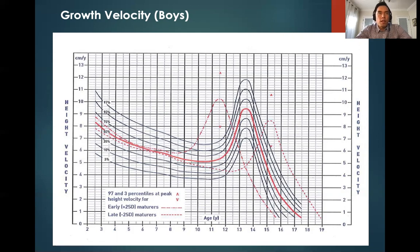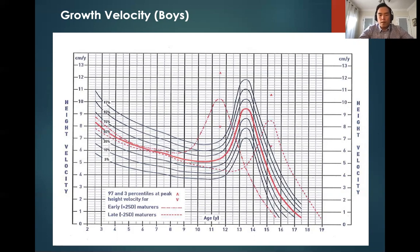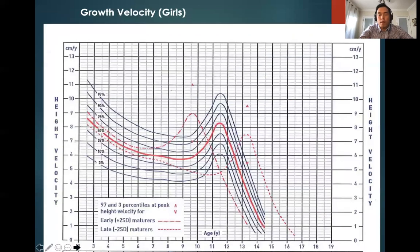This peak growth spurt occurs at mid-puberty, around Tanner stage 3 to 4. The graph shown is for boys. For girls, it would shift to the left because girls typically start pubertal development about two years before boys. You still have two dotted lines: one shifted to the left for precocious puberty and one shifted to the right for delayed puberty in girls.